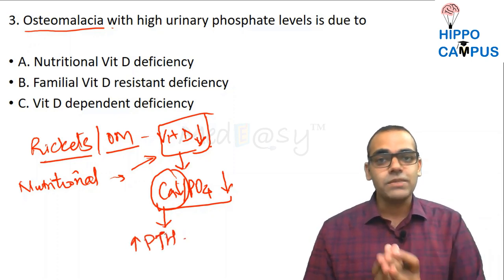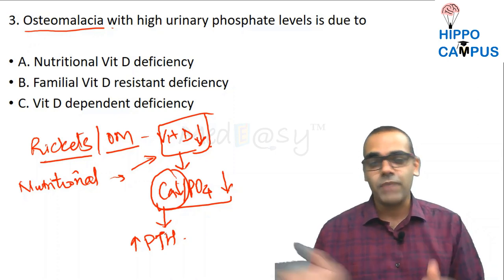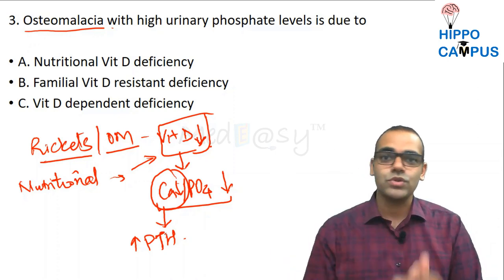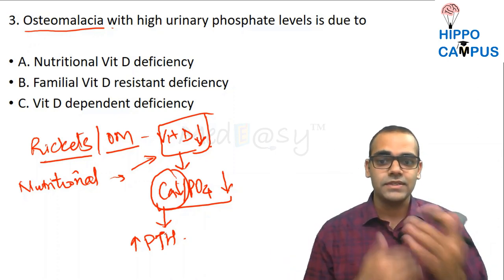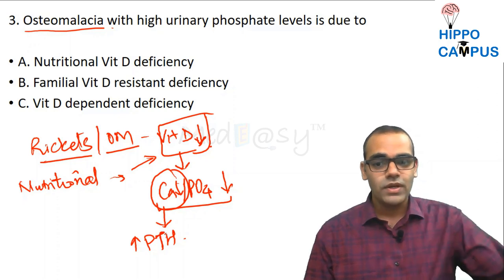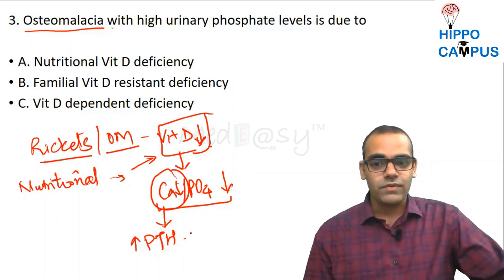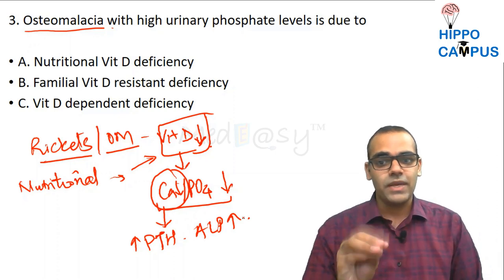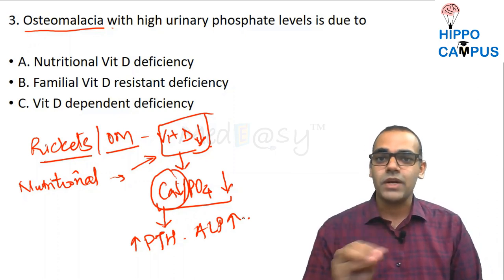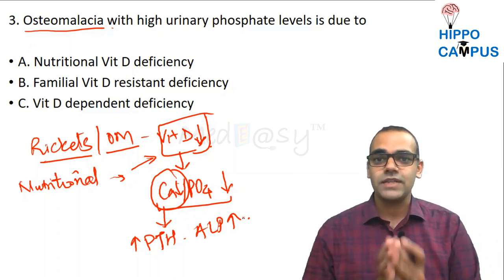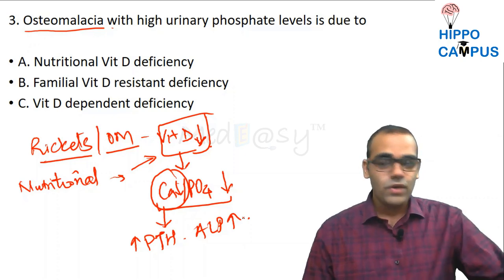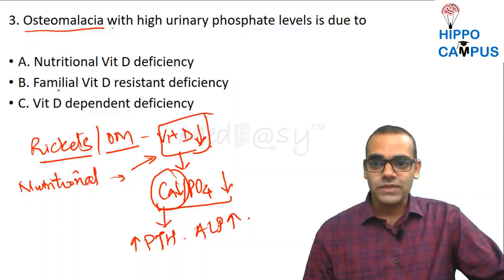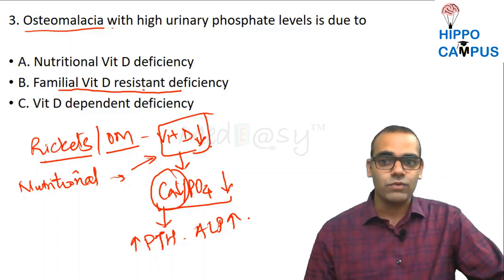Hypocalcemia, via the feedback mechanism, stimulates the parathyroid gland to increase parathyroid hormone, which causes an increase in alkaline phosphatase. This is the main mechanism of vitamin D metabolism in rickets and osteomalacia. Now let us see the difference between nutritional and vitamin D resistant rickets.